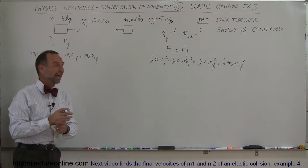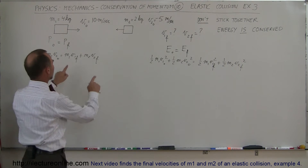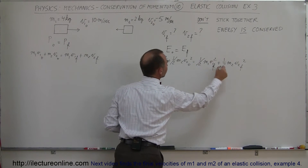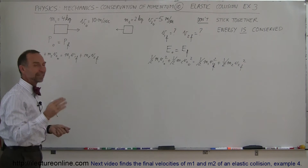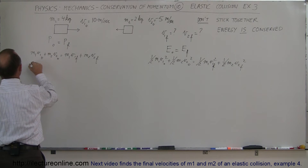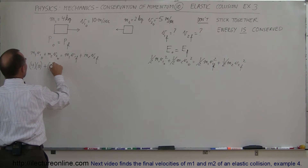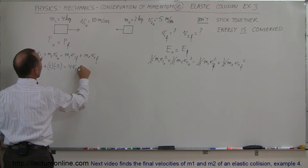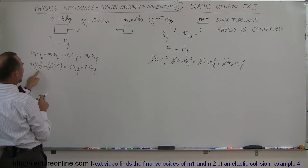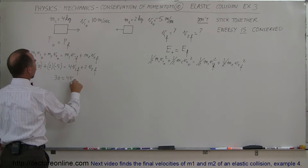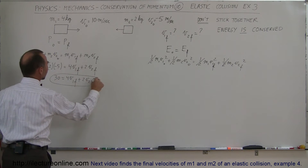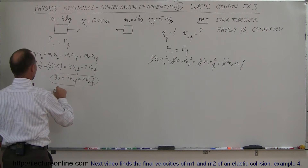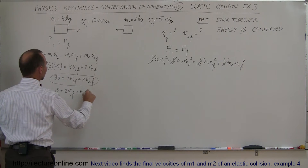Since both momentum and energy are conserved, we have two equations with two unknowns. We can simplify the momentum equation by plugging in the numbers: 4×10 + 2×(−5) = 4·V1f + 2·V2f, which gives 40 − 10 = 30 = 4·V1f + 2·V2f. Dividing everything by 2, our simplified first equation is: 15 = 2·V1f + V2f.